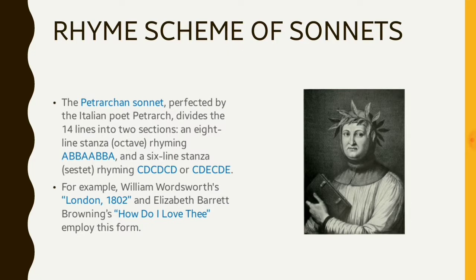So generally Petrarchan sonnets are written in two stanzas. The first stanza which is composed of eight lines with the rhyme scheme of ABBA ABBA is known as octave. And the last stanza is composed of six lines and it is known as sestet. And the general rhyme scheme of the sestet of a Petrarchan sonnet is CDCDCD or CDECDE.